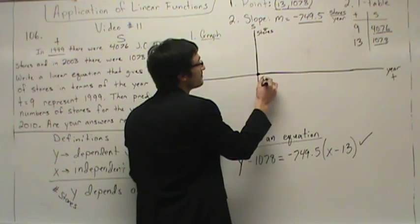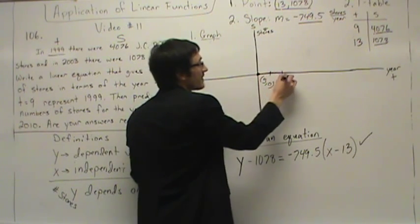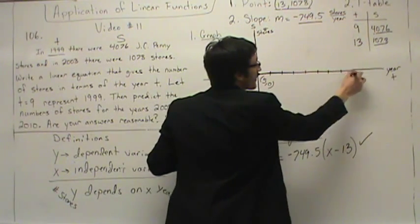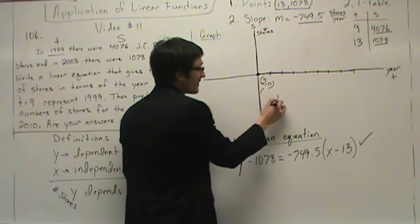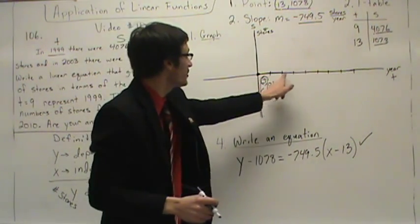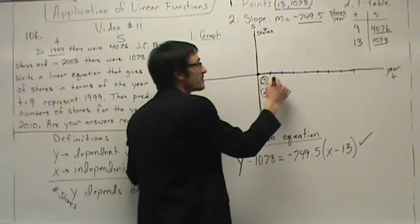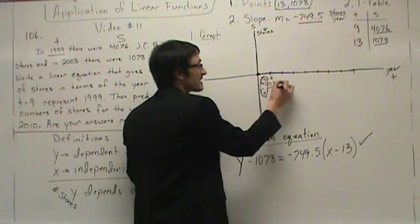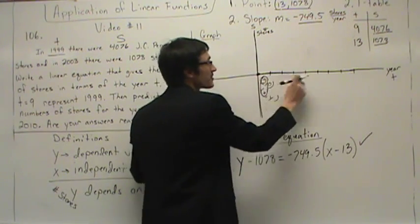We're going to change this location, starting at, say, 5. Setting up units on the X axis — if the origin is at 5, units of 1 give us 6, 7, 8, 9, 10, 11, 12, 13. For the Y axis, we have to go up to 4,076. If you only have space for 4 marks, change your scale to units of 1,000: 1,000, 2,000, 3,000, 4,000. That way 4,076 fits just slightly above 4,000.